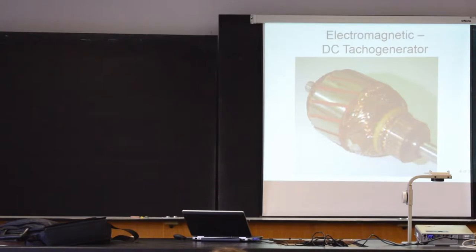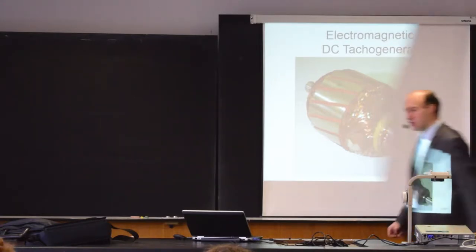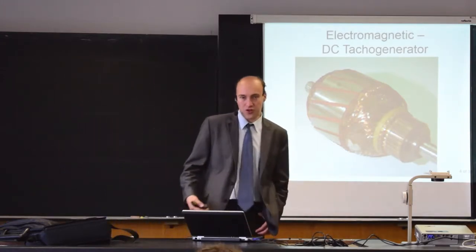Here is a DC tacho generator we can look inside. This is the coil that is rotating, this is the commutator with the silver brushes, and this is the permanent magnet and the iron used to conduct magnetic flux. When you use this device, you connect it through a coupling to a motor and you can measure its speed. We'll have DC tacho generators on the labs in a few weeks, so we'll have a chance to see that and measure some properties.